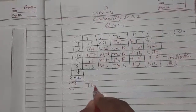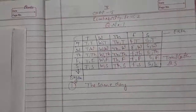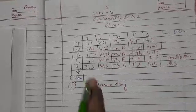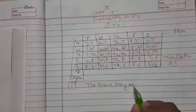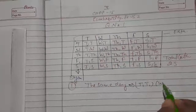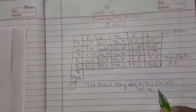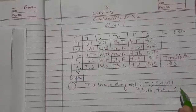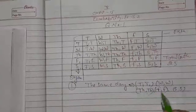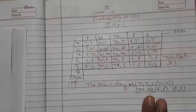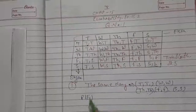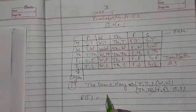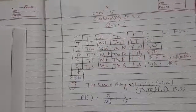Same day means Ekta and Shyam both visit on the same day. We look at how many same-day pairs we have: Tuesday-Tuesday, Wednesday-Wednesday, Thursday-Thursday, Friday-Friday, and Saturday-Saturday — that gives us 5 favorable outcomes. Total outcomes are 25, so the probability of visiting on the same day is 5/25 = 1/5.